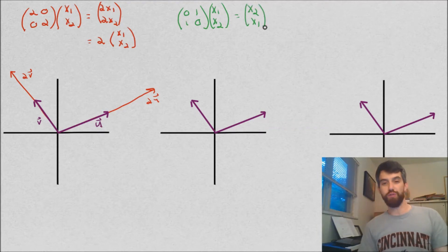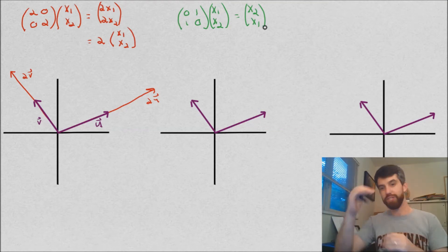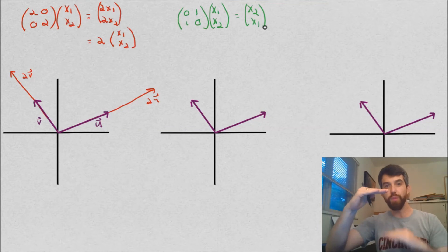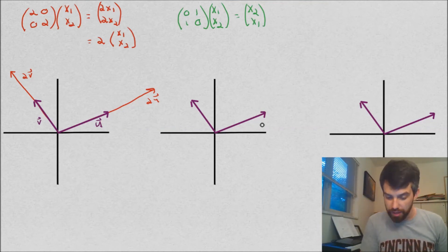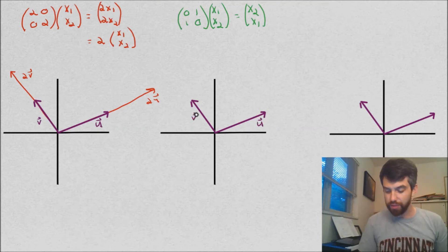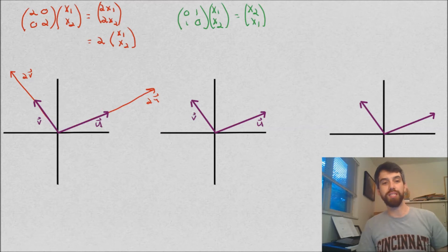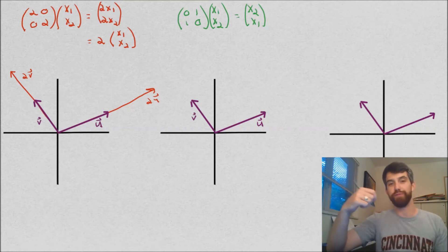So what has this transformation done? Well, it's taken the input, which has a first component and a second component, and it flips them. The first component becomes the second component, and the second component becomes the first component. So if I've got my u here and my v here, the way I want to think about this is it's reflecting over that line y equals x. What was horizontal becomes vertical, what was vertical becomes horizontal.